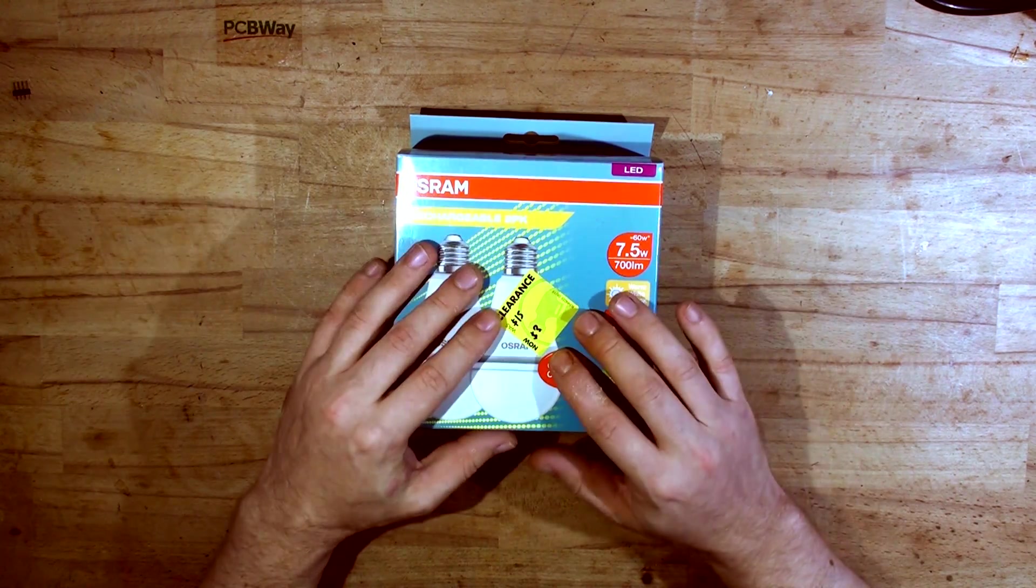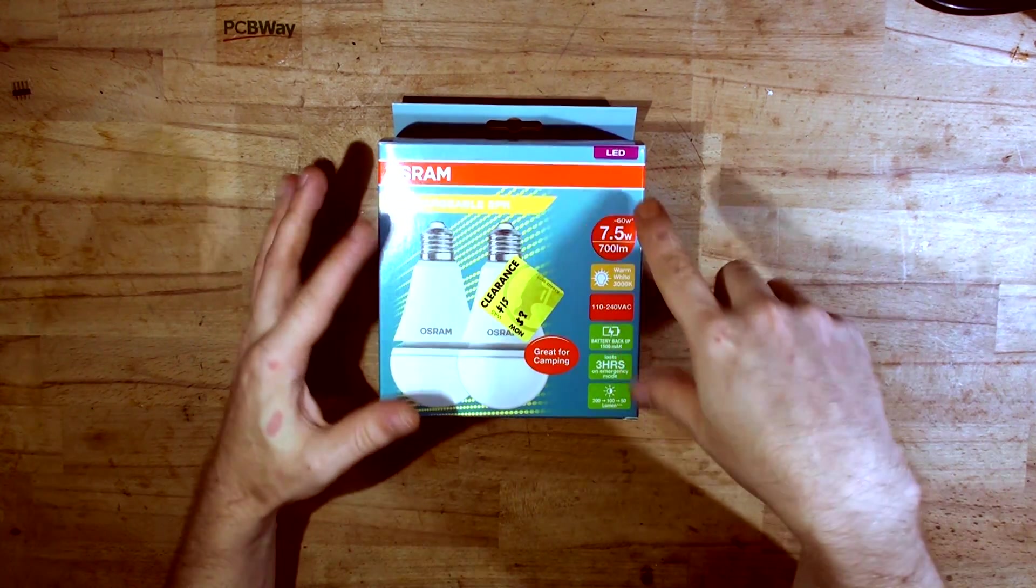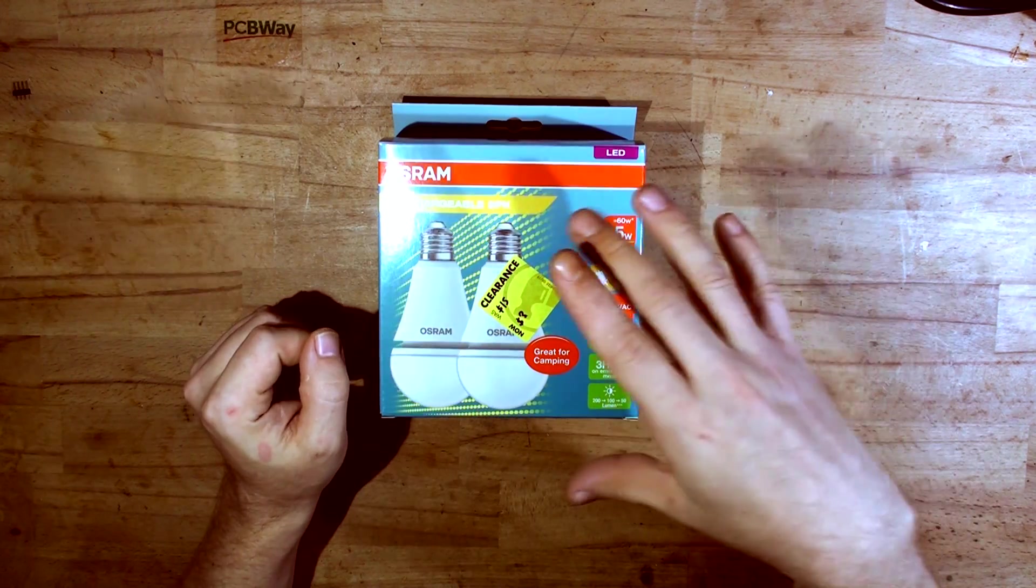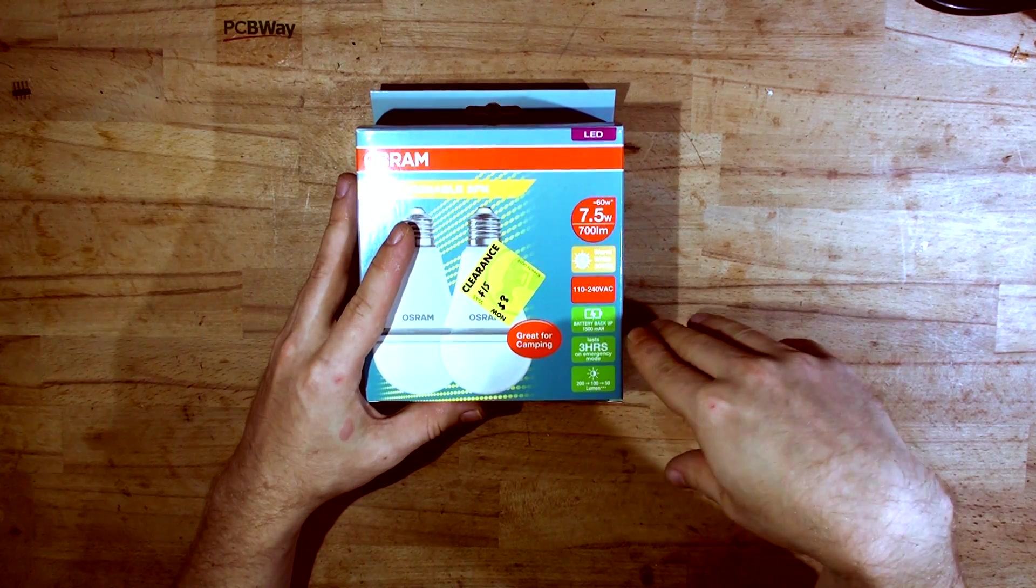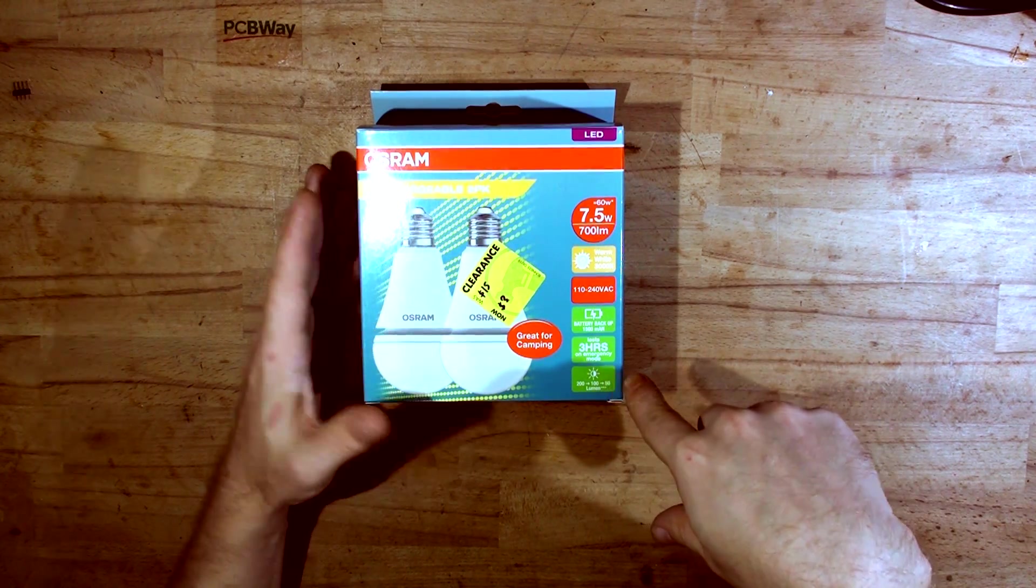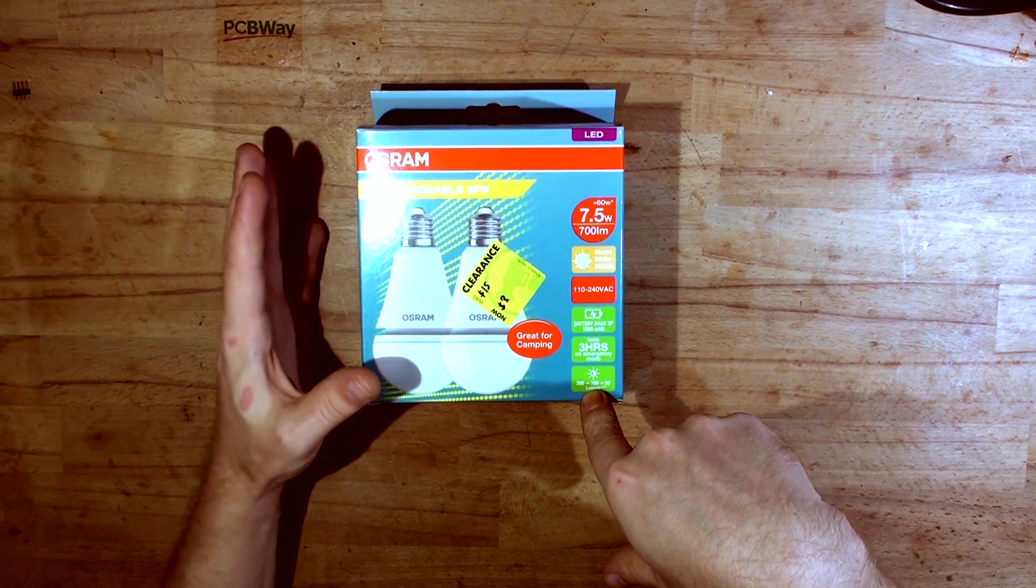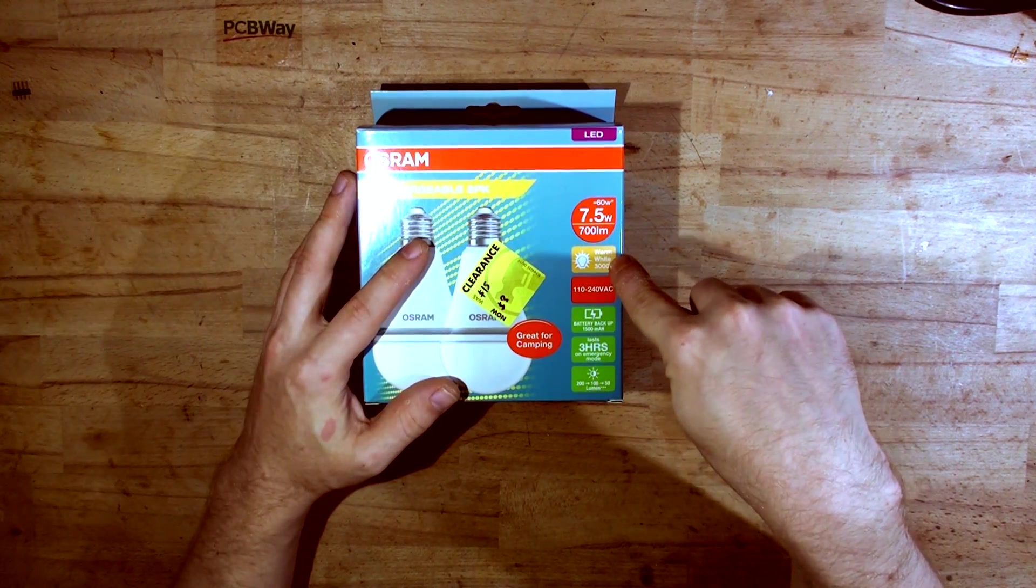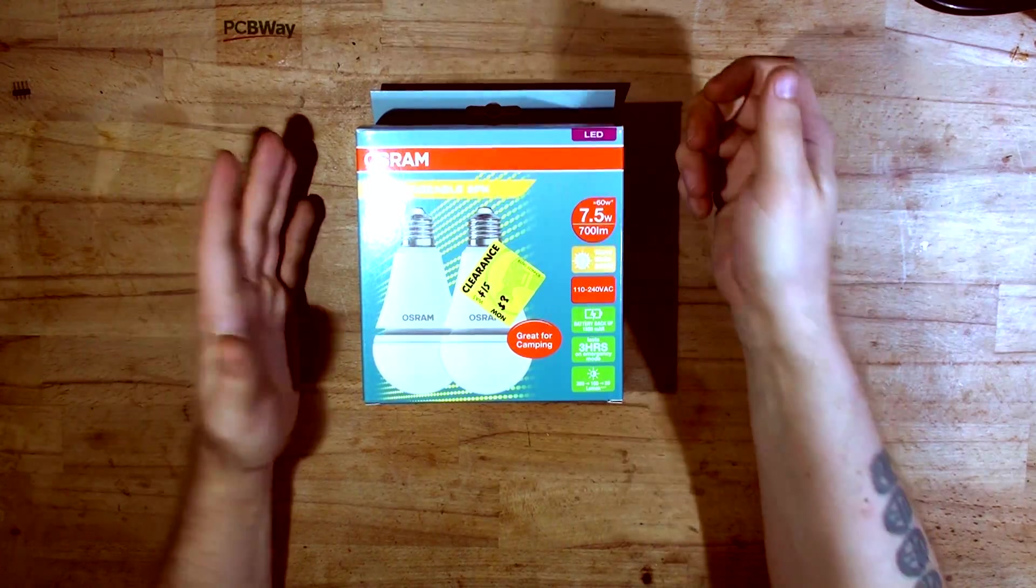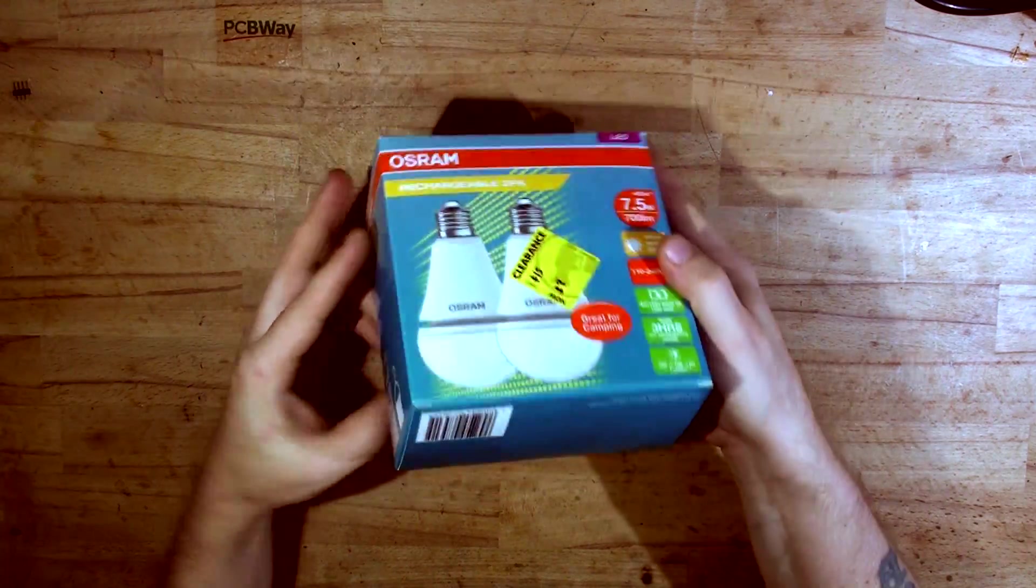So they're pretty much a UPS type of bulb. They can last up to three hours on emergency mode with a lithium battery. They've got three different brightness dim levels. It's a warm white, there are cold whites as well. I bought a whole bunch because, you know, three dollars for the bulbs. So we're gonna explore what's inside of them. Let's open it up.